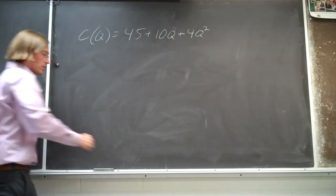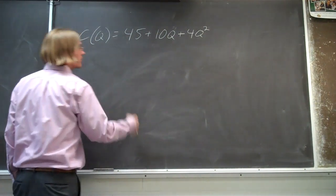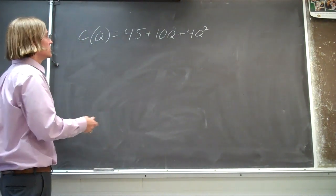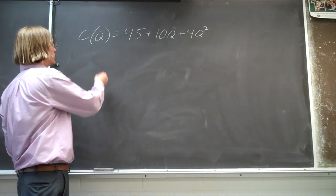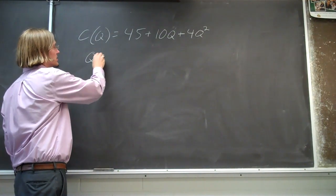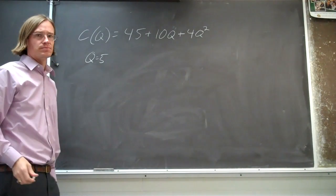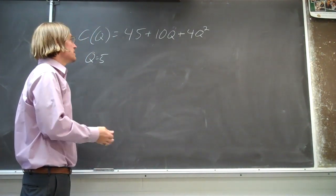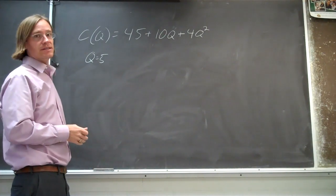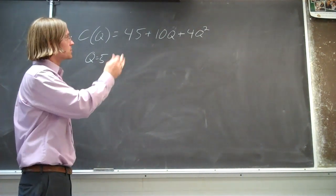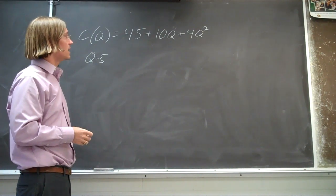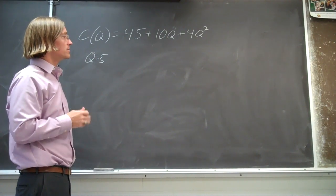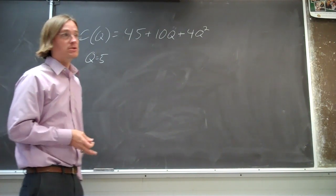If we're given the cost function and we're asked to solve for the marginal cost — the additional cost of producing, let's say, the fifth unit — how do we go about this? The easiest way is to use calculus: take the derivative, plug in five, and solve it. If we're going to avoid using calculus and go the roundabout way, we can still find this marginal cost.